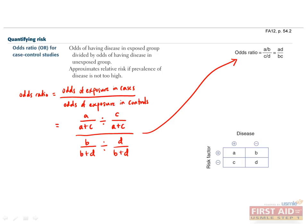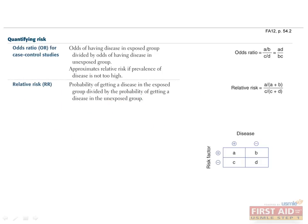Recall that the odds ratio approximates the relative risk if the prevalence of the disease is not too high. Here's another question for you. What type of study uses relative risk as a measure of association? That's right. The answer is cohort studies. The relative risk is formally defined as the relative probability of getting a disease in the exposed group compared to the unexposed group. It is calculated as the fraction with disease in the exposed group divided by the fraction with disease in the unexposed group. From the table, we see that the relative risk is calculated as A divided by A plus B over C divided by C plus D.